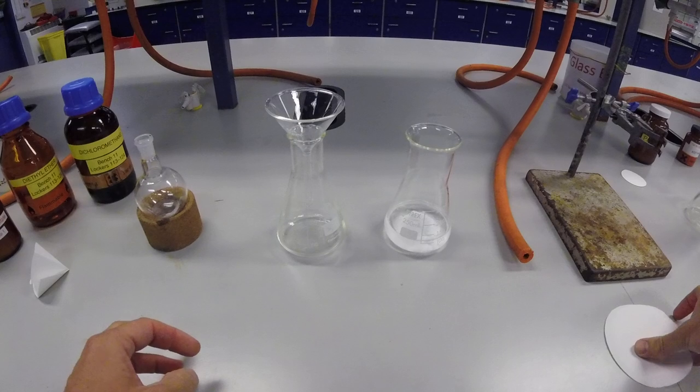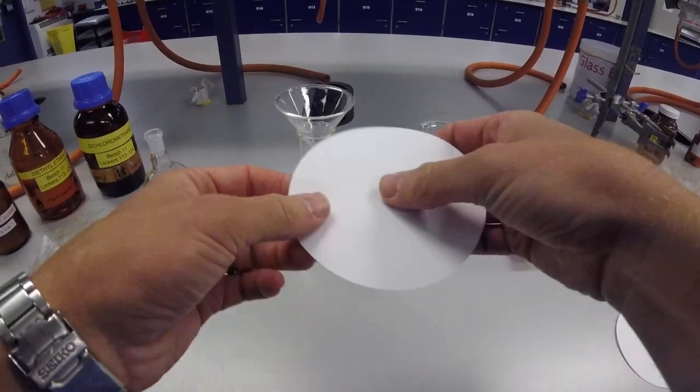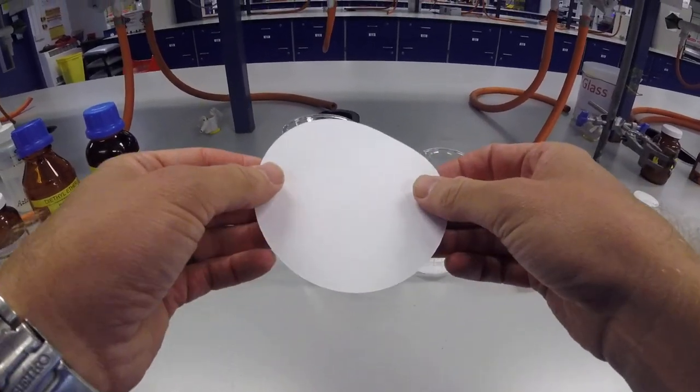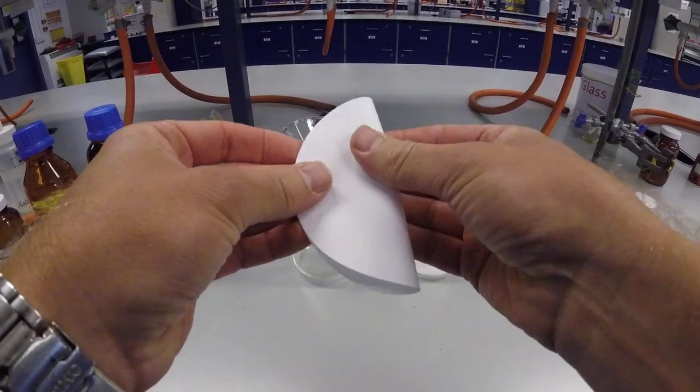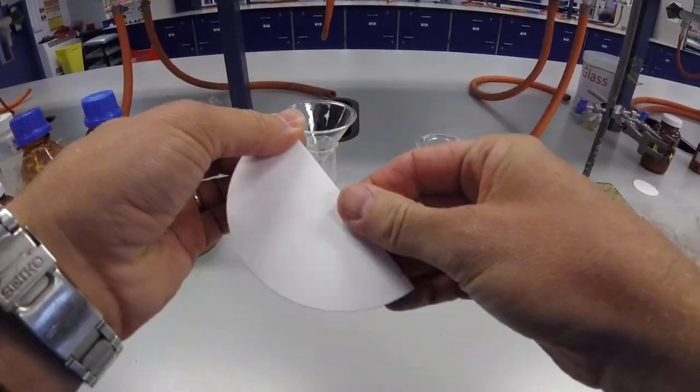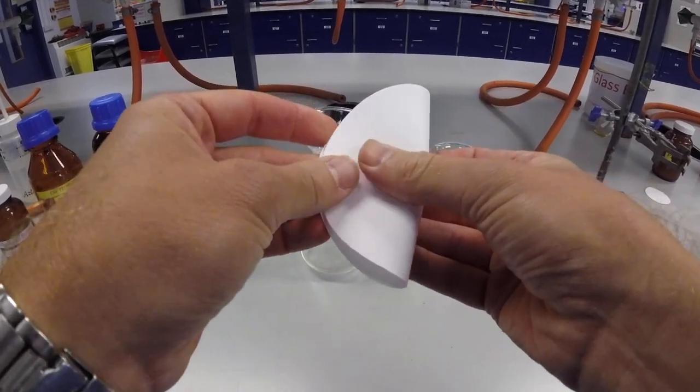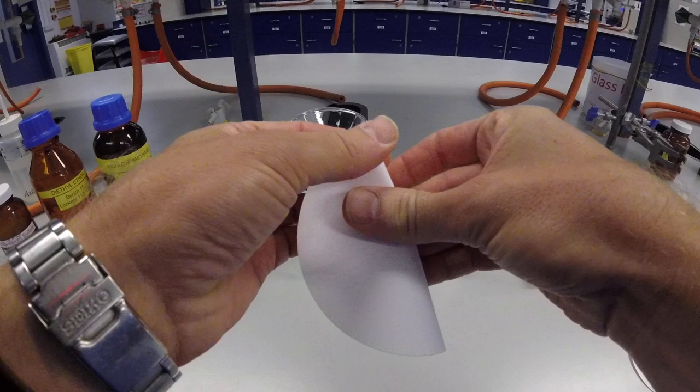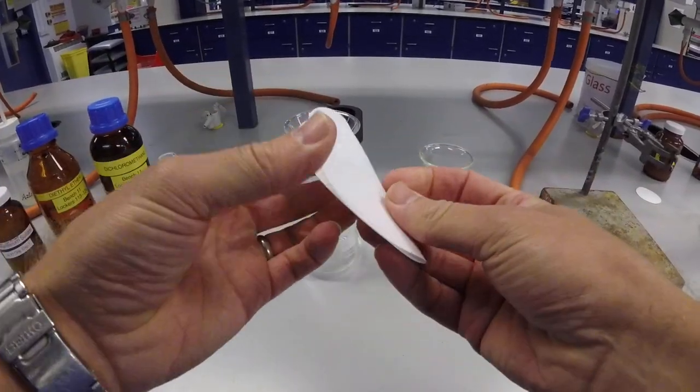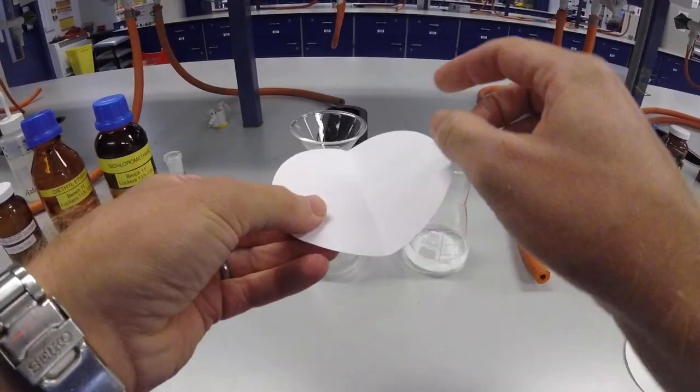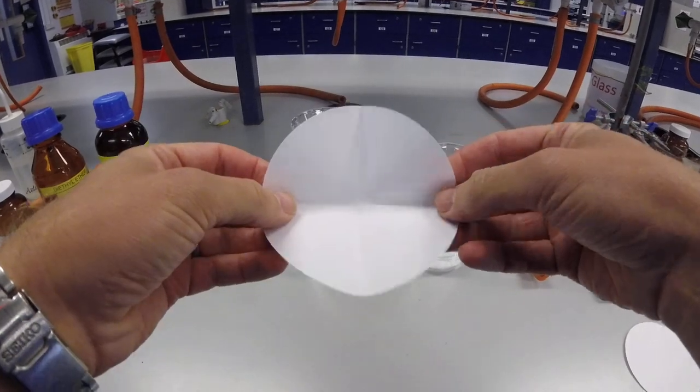So fluting a filter paper is actually quite easy. Take your filter paper and fold it in half. Open it out and fold it in half again, matching up those folds. So you now have an X all going into the center.